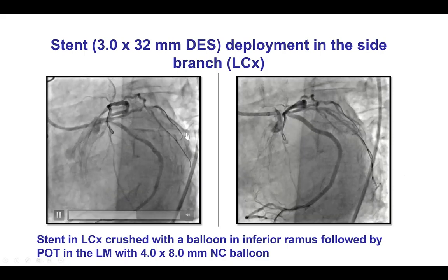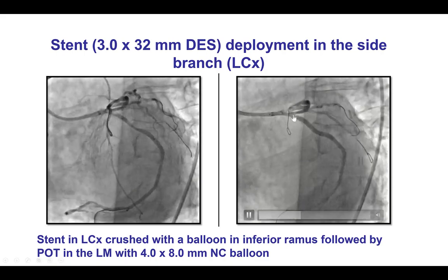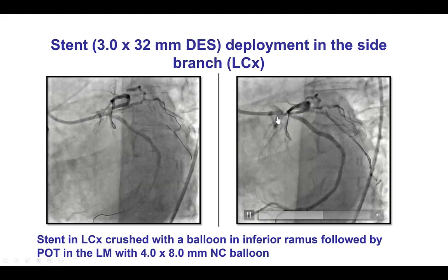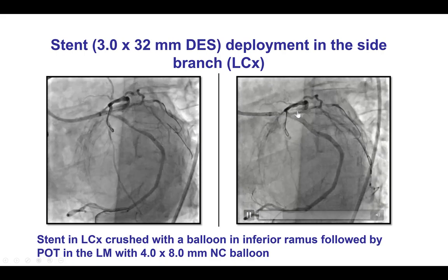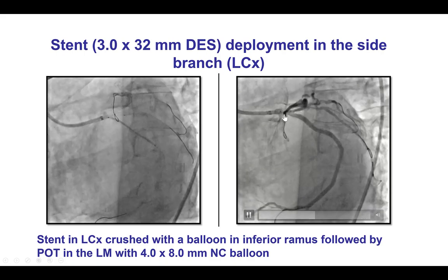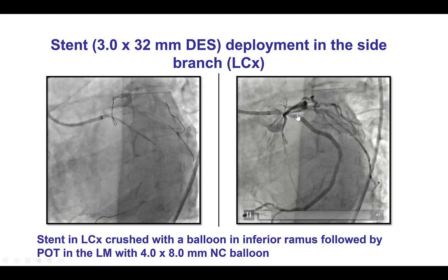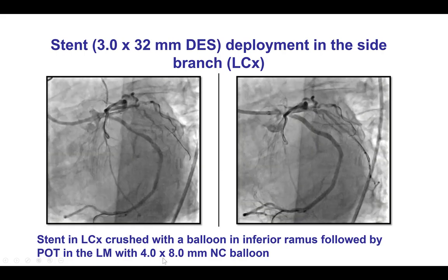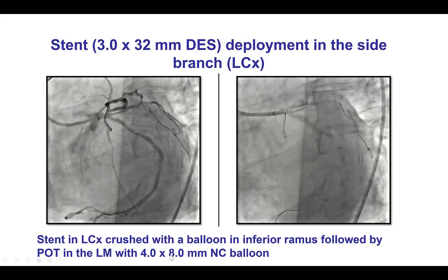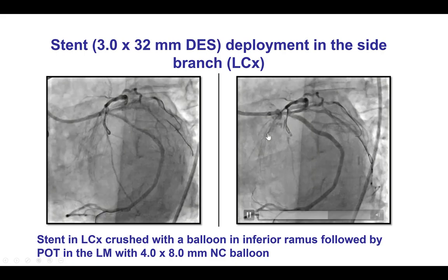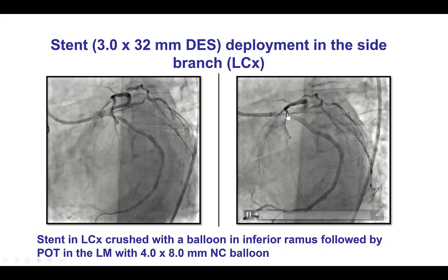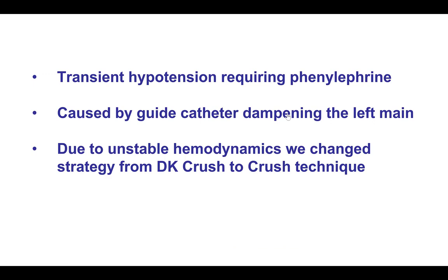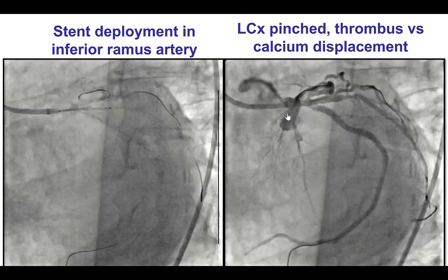We started by dilating all heavily calcified lesions using high-pressure balloons. There was a waist in the inferior Ramus that eventually resolved with higher-pressure balloon inflations, although there was some compromise of flow to the inferior Ramus. We then treated the mid-circumflex and mid-LAD lesions before treating the bifurcation. We took a long drug-eluting stent from the mid-circumflex all the way to the left main. This was deployed and crushed using a balloon placed in the inferior Ramus, followed by a proximal optimization technique with a 4.0 by 8 mm non-compliant balloon. This went well; however, the patient did develop hypotension at this point, and we decided to change our strategy.